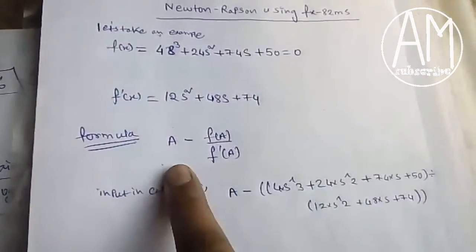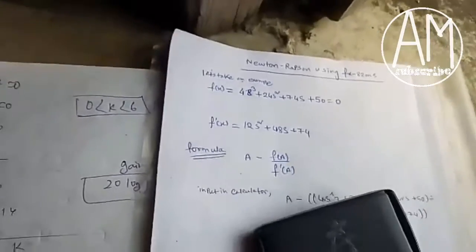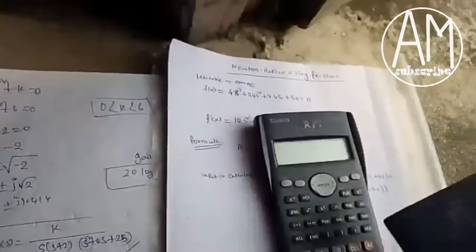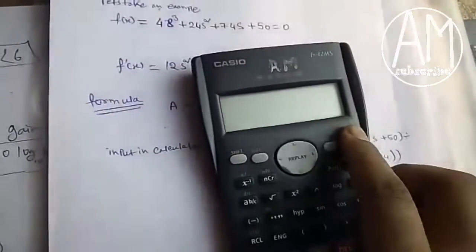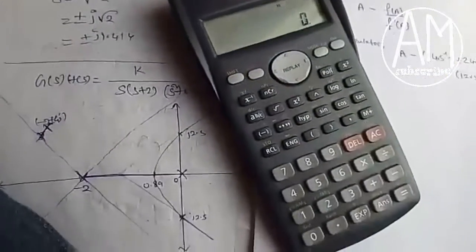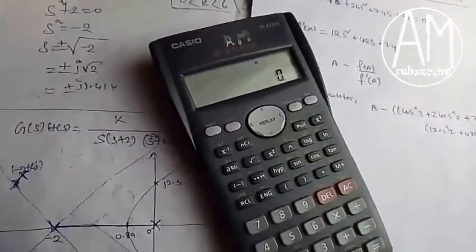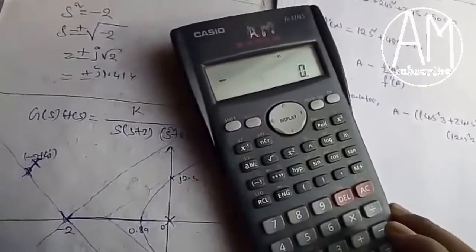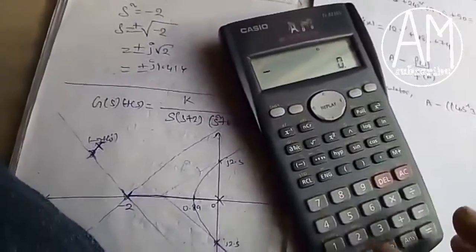Now take the fx-82ms calculator and watch it very carefully. First, we have to input the value of A for which we are going to calculate, so take any arbitrary value like 1.